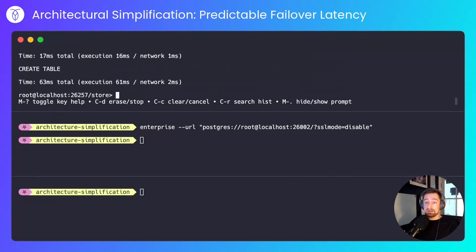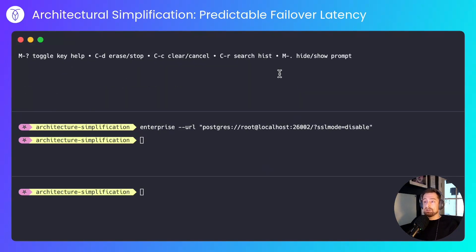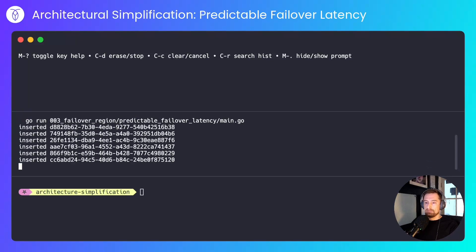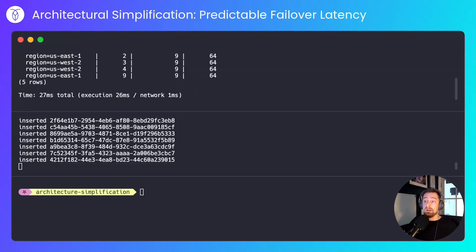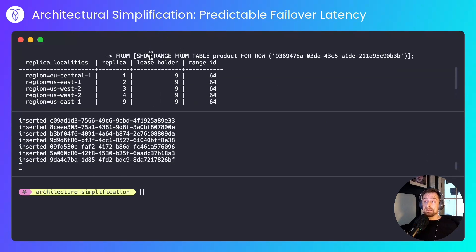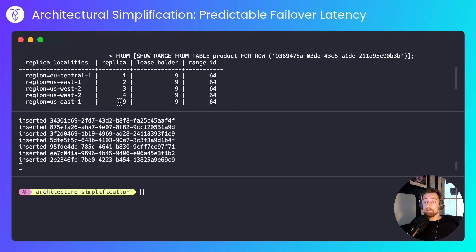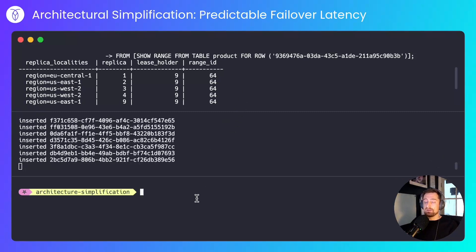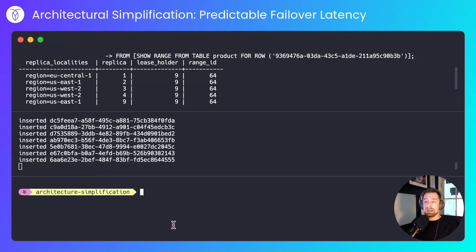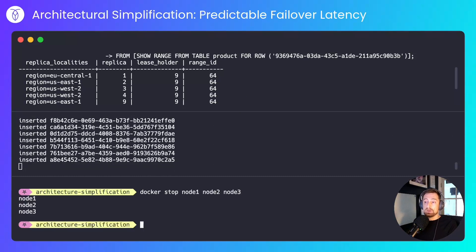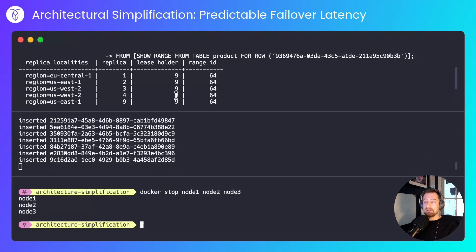I'll use that database, create the same table as in the before scenario, insert identical data, and run the application. We can see from a query that for a given row, the leaseholders exist on replica 9, which corresponds to US East 1. Now I'll knock out all of the nodes in the primary region. We might see some interruption depending on whether there are in-flight requests at that time. We saw one failed query — which could have been retried — and now the primary region is gone.